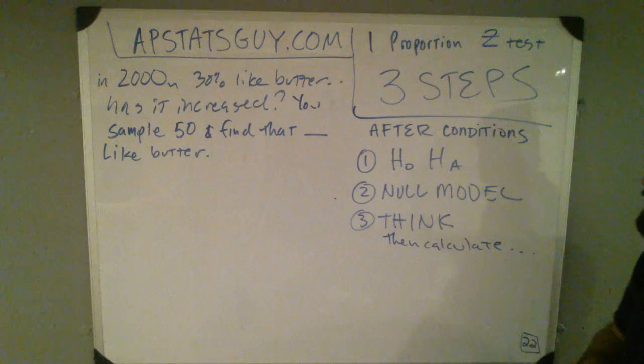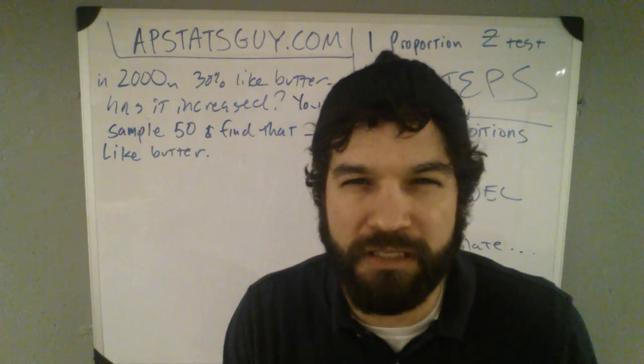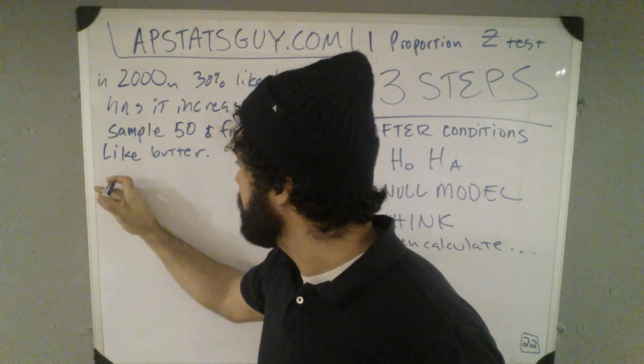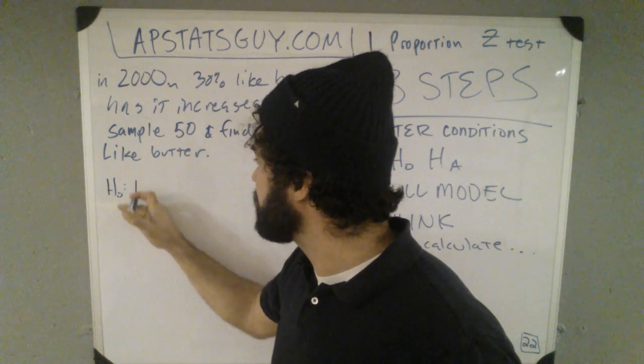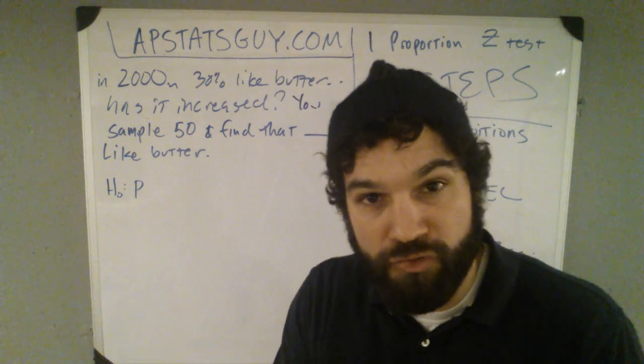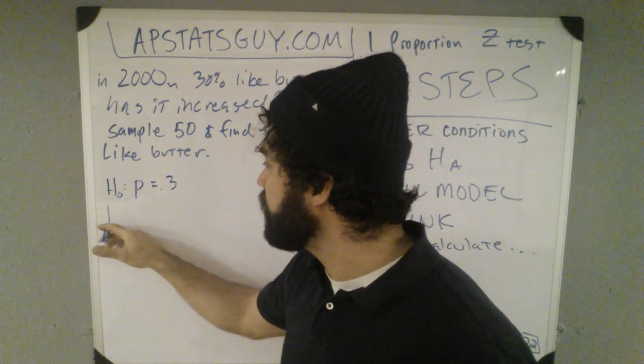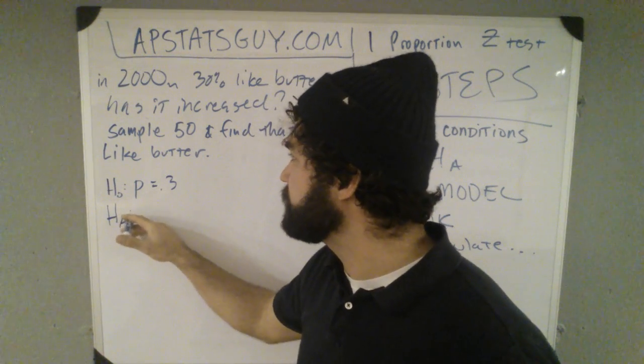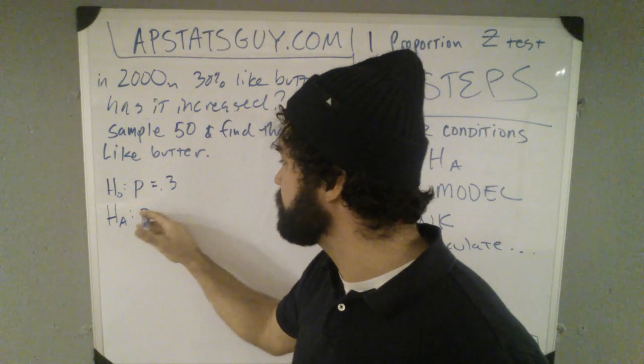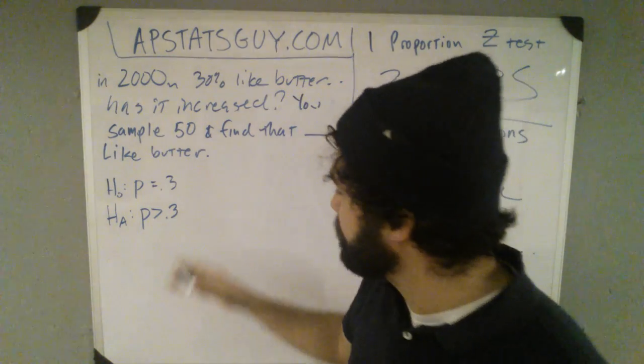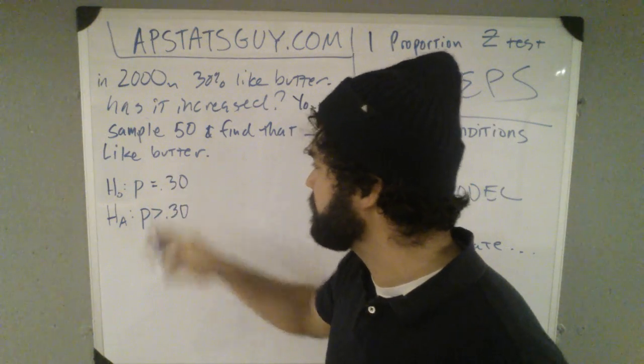So here we go. Ho-ha. Well, if 30% used to like butter, I'm going to assume 30% still do. And that's my null hypothesis. My null hypothesis is that the proportion of the population, the truth, is still .3. My alternative is going to answer the question, has it increased? Well, let's see. Let's see if we can prove that it has increased, because that's what I'm curious about, .3. Now, I'll put .30 if that's the way you'd like to see it better.